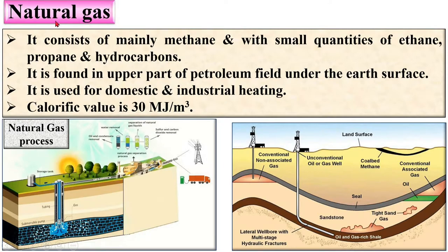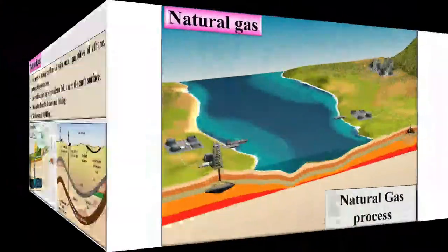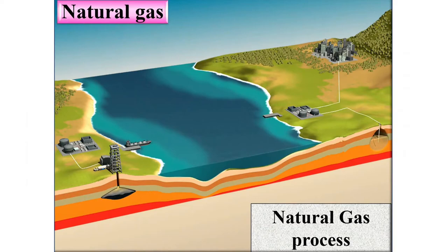The calorific value of natural gas is approximately 30 megajoules per meter cube. So if you burn 1 meter cube of natural gas, you will get 30 megajoules of heat. This is the natural gas overview, shown with an image for better understanding.